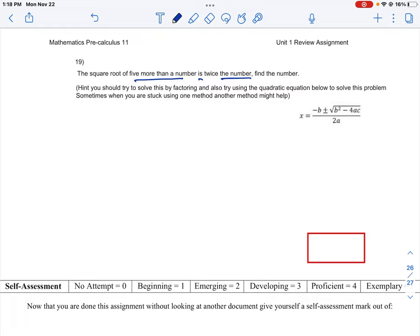The first thing you should do is define a variable, so let x equal the number we're looking for. The word 'is' represents equals, and it says the square root of 5 more than a number. So 5 more than a number is simply x plus 5, and we're taking the square root of that, which equals twice the number, 2x.